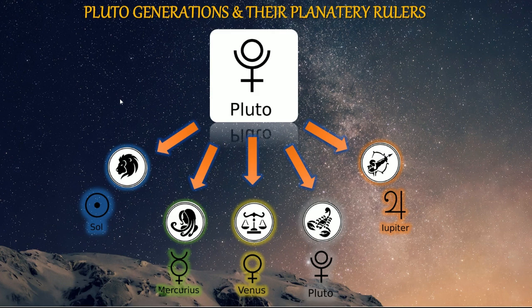Their planetary ruler was the Moon. So when you look at the soul dynamics of that generation, wherever the Moon landed in the astrology chart would tell us specifically what that individual was going through. That's what is key here — it makes it specific.